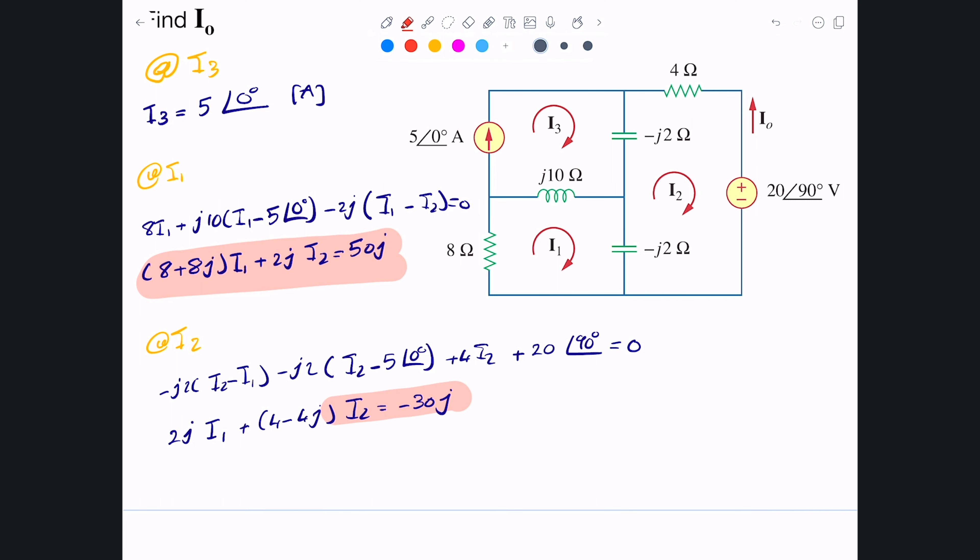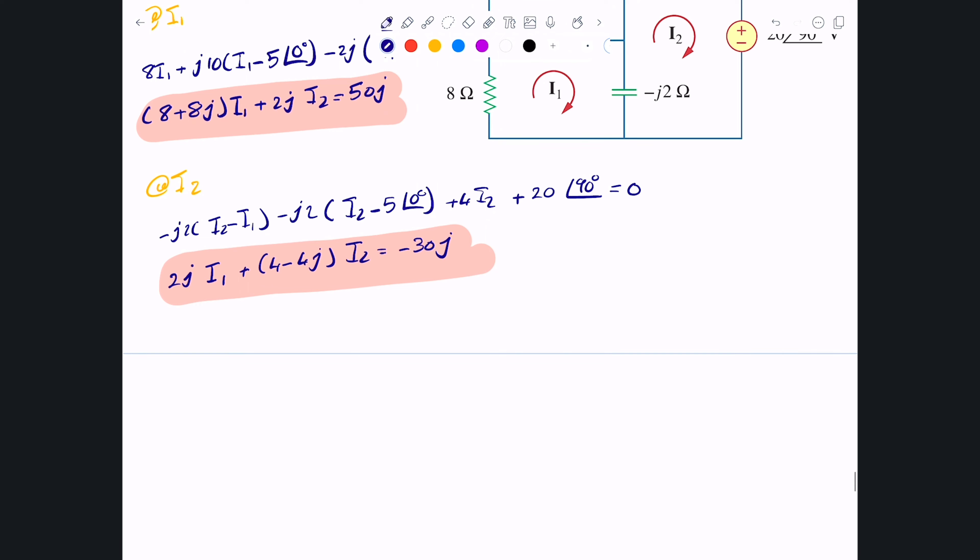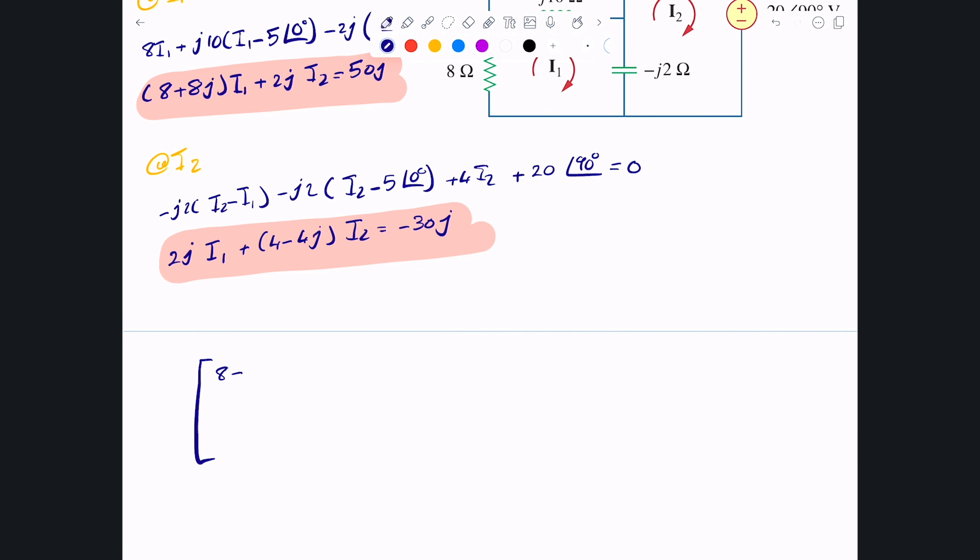Two equations, two unknowns. I'll write them in matrix form so that I can actually solve them using a calculator or Python or MATLAB. (8 + j8), j2, j2, (4 - j4) times [I1, I2] equals [j50, -j30]. I'll go ahead and solve this.